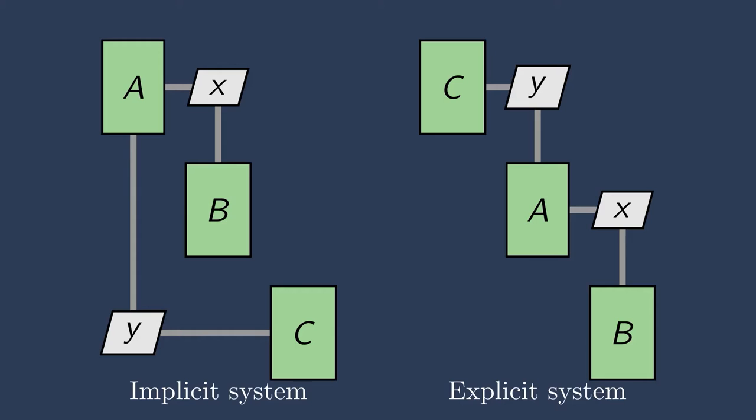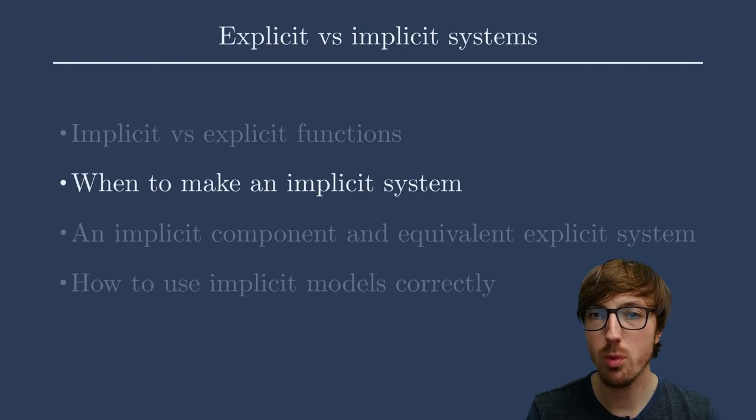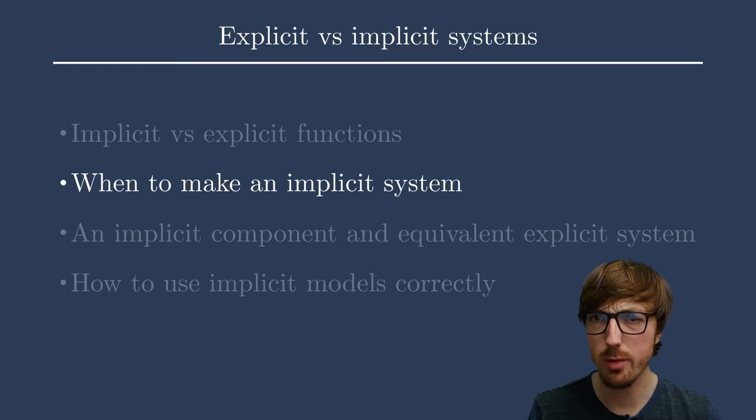In general, explicit systems are easier to solve and provide a more straightforward way to model your system. However, there are many cases in the real world where we need to model implicit systems. Let's talk about that.